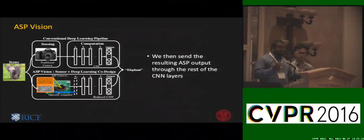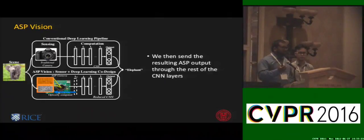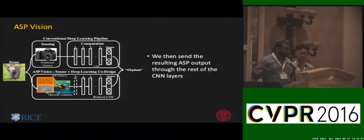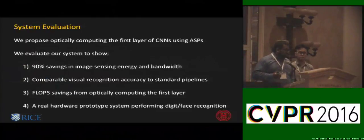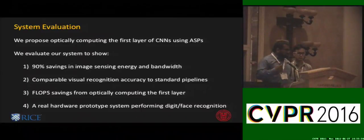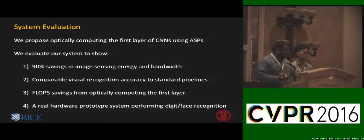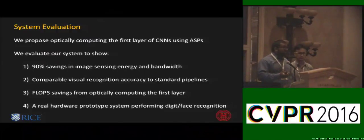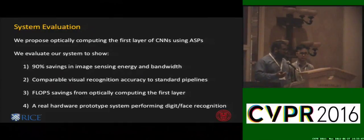We use the optical point spread function of ASPs to act as hard-coded first layer weights of a CNN, and we feed the resulting edge images to the rest of the CNN layers. To evaluate this system, we show energy savings while demonstrating comparable visual recognition accuracy to standard pipelines. We investigate the flop savings from optical computation of the first layer, and finally show a real hardware prototype. I'll now hand it over to George Chen.